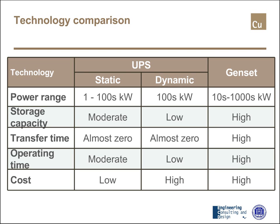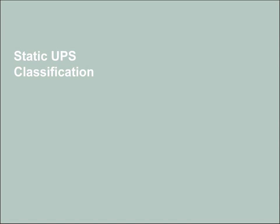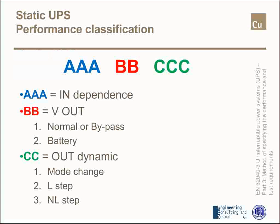So, having done this comparison, let's concentrate on static UPS and start with their classification. First, let me mention the meaning of UPS. Since approximately 2003, UPS changed its meaning. In the past it was an 'uninterruptible power supply.' Now, formally, it means an 'uninterruptible power system,' because it's not just a product — a power supply is just a product, while a system is something more comprehensive and more complicated.